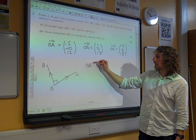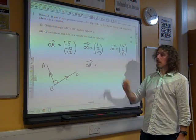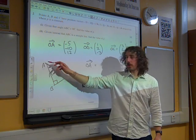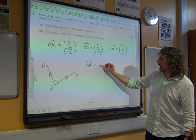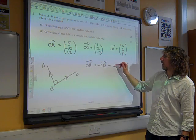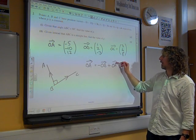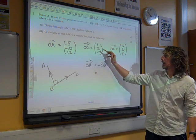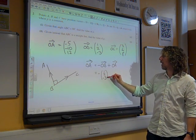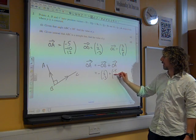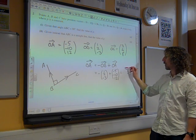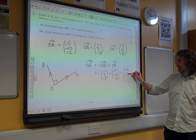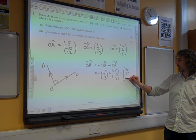So the vector BA, to get from the point B to the point A, you would go back to the origin, and then from the origin to A. So that's minus OB plus OA. The vector BA is minus 1, 2, minus 3, plus negative 5, negative 10, 12. Which gives us a vector of minus 6, minus 12, 15, I think.